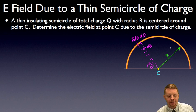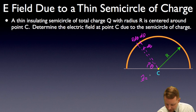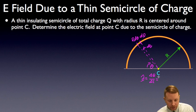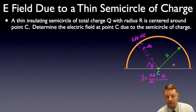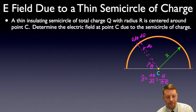Let's define a linear charge density here. The linear charge density for that arc, since it's uniform, is going to be the charge divided by the length. Our total charge is Q, and our length — well, once around a circle is 2πR, so a semicircle must be πR. And with that, let's get started.